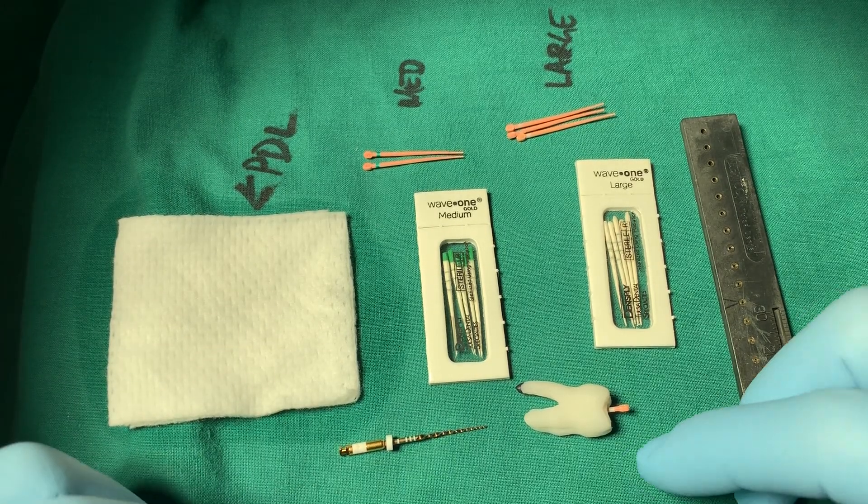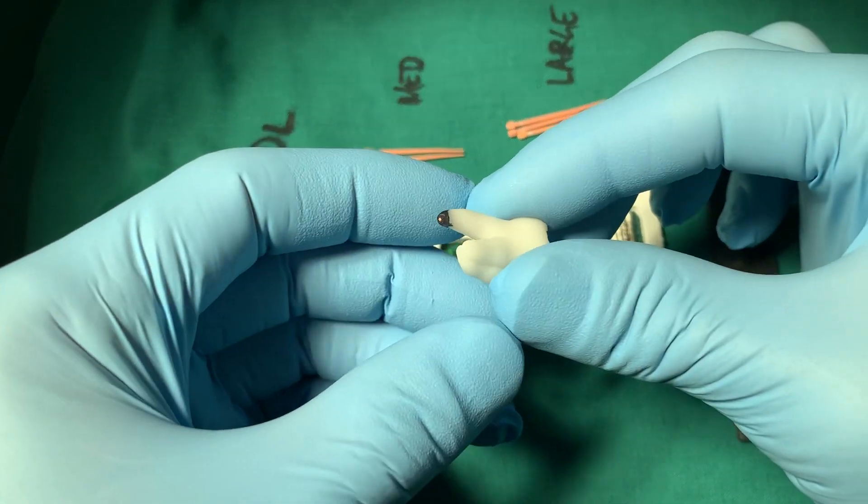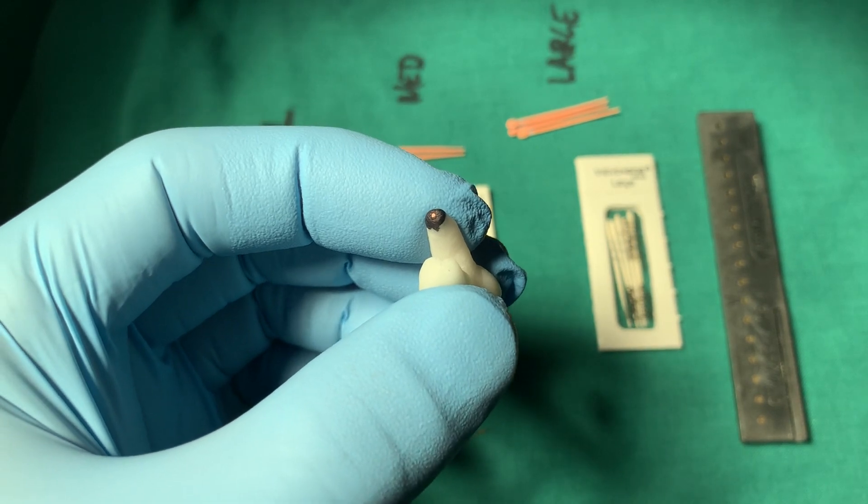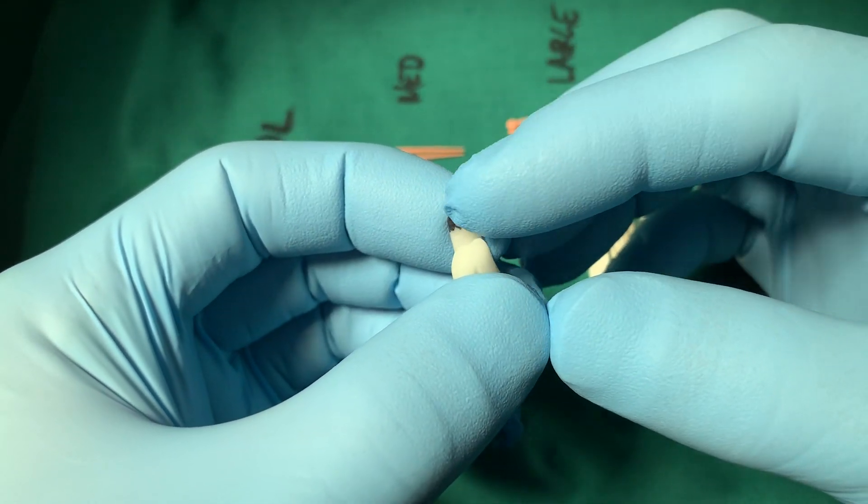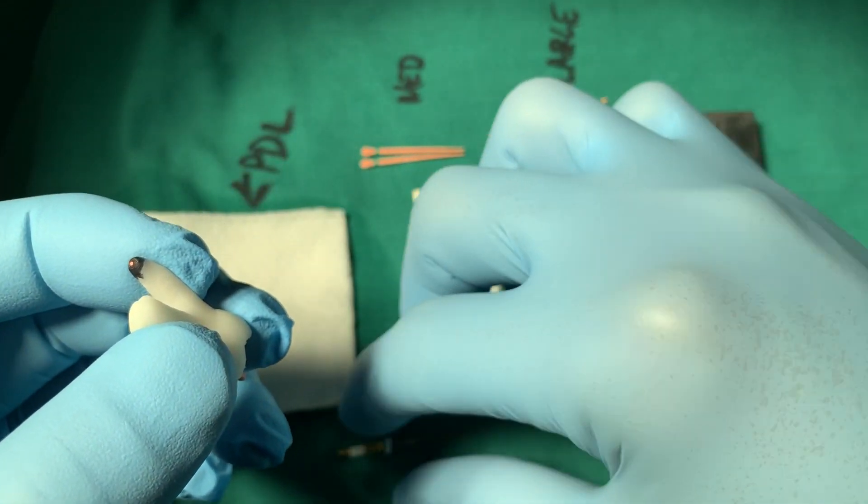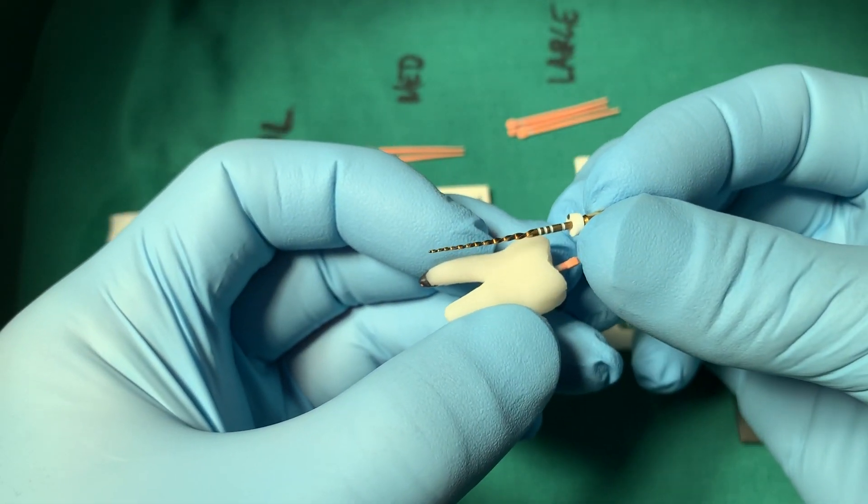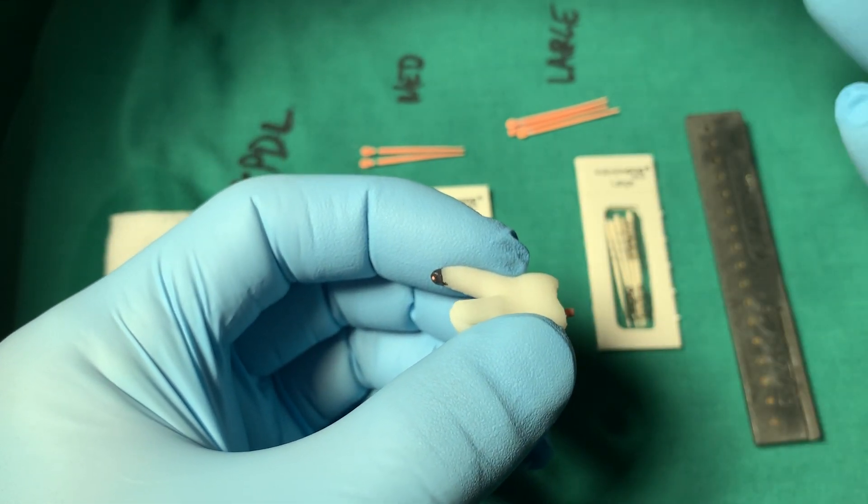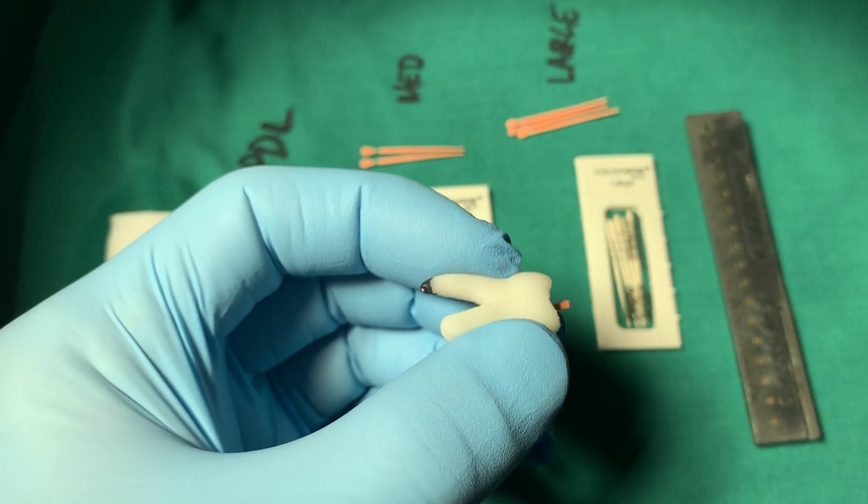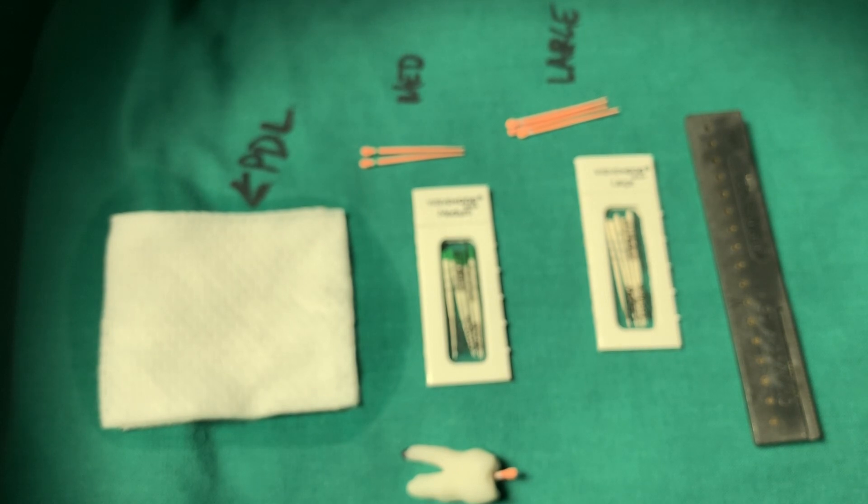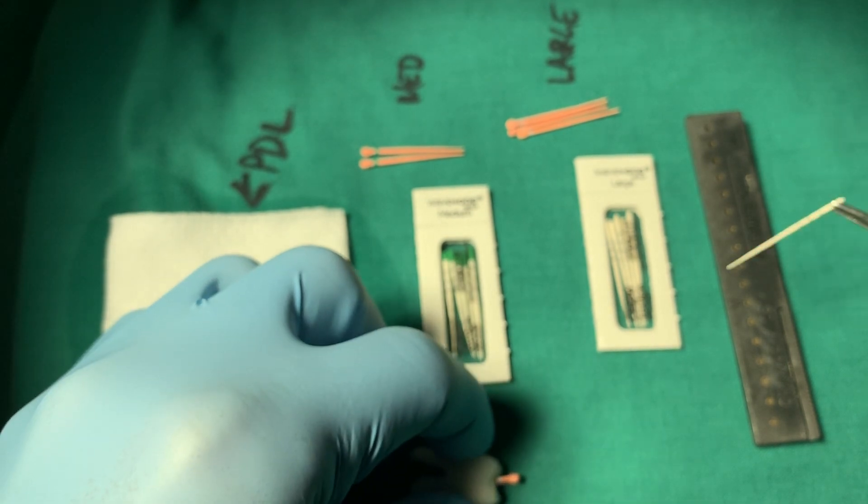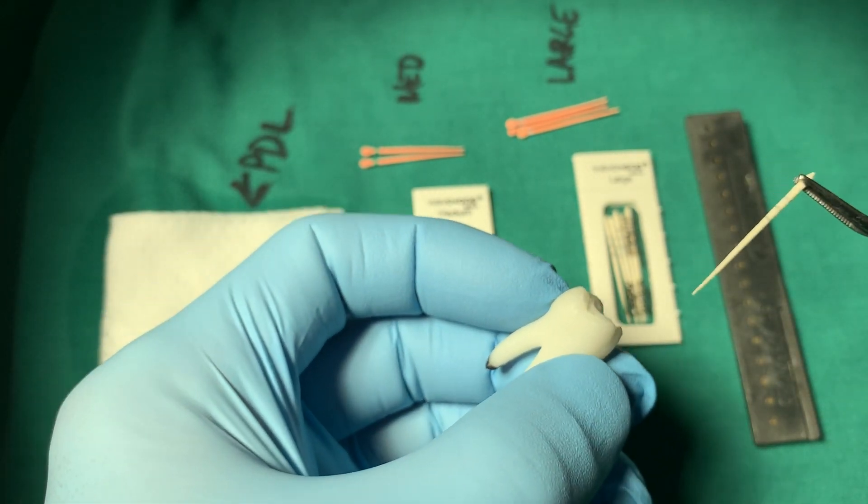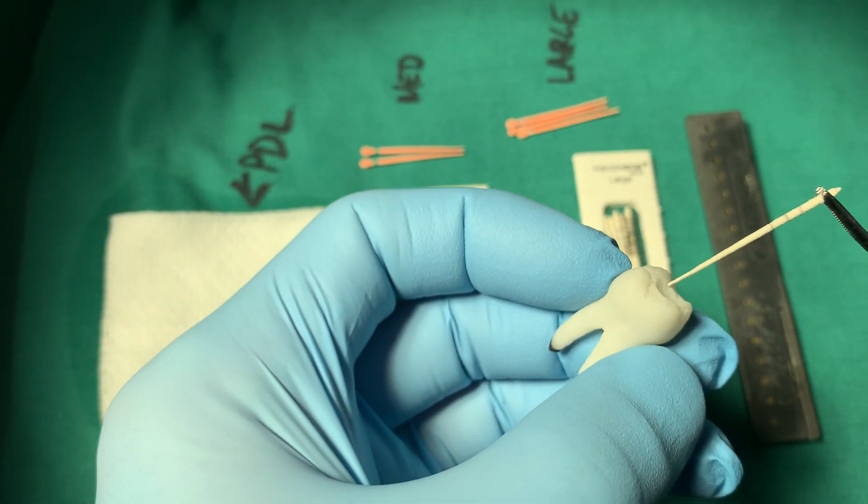What we get them to do is we get them to check their working length. So if this is our plastic tooth and I just painted the palatal canal with some marker, and we've instrumented this tooth with a 4505 Wave 1 Gold Large, and we fit our gutta percha point. Then to confirm when they're drying their tooth with paper points, what we get them to do is take their - this is one technique you can use just to confirm your length - is we're going to take our paper point to dry our canal.